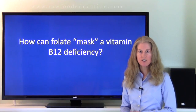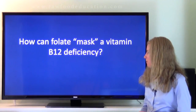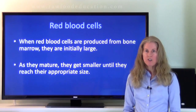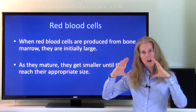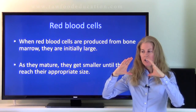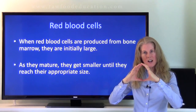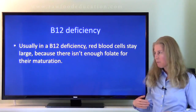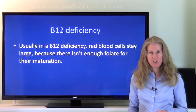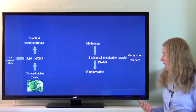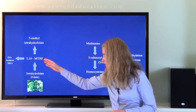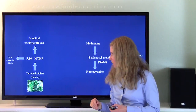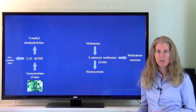Here's a question that I'm often asked: how can folate mask a vitamin B12 deficiency? To answer this, I need to give some background on red blood cells. When red blood cells are produced from bone marrow, they start off as being pretty large, and as they mature they get smaller until they reach their appropriate size. Usually in a vitamin B12 deficiency, the red blood cells stay large because there isn't enough folate for their maturation. Without vitamin B12, folate from the diet gets converted into methylene tetrahydrofolate, which can go into DNA synthesis or red blood cell formation. But if somebody doesn't have much folate in their diet, their ability to make red blood cells is going to be affected.